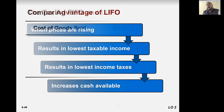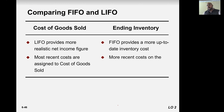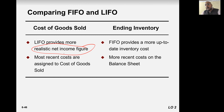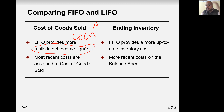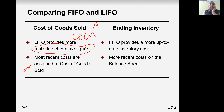Comparing LIFO with FIFO: LIFO provides a more realistic net income figure because cost of goods sold is the highest number during an inflationary period — since prices are rising, your profit looks more realistic. However, your balance sheet inventory may not look as strong because it reflects older, lower costs.